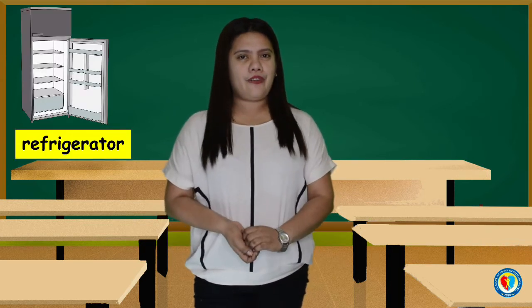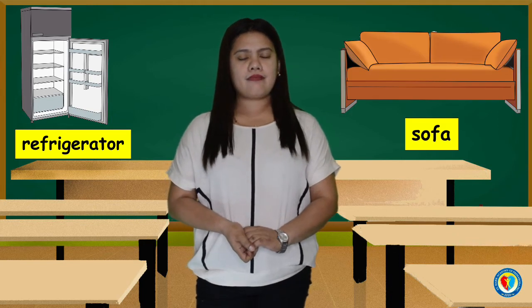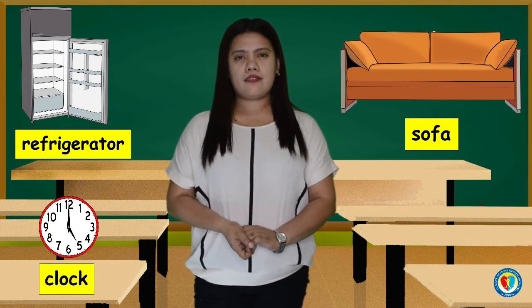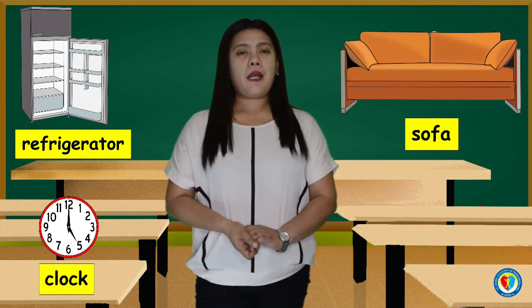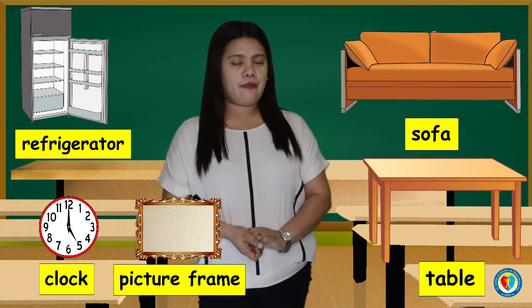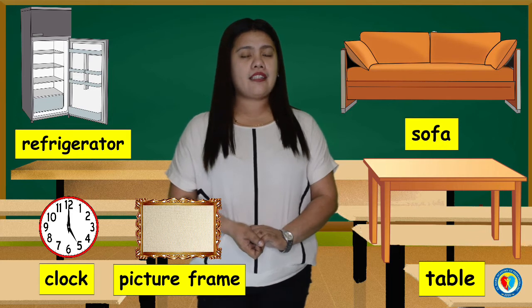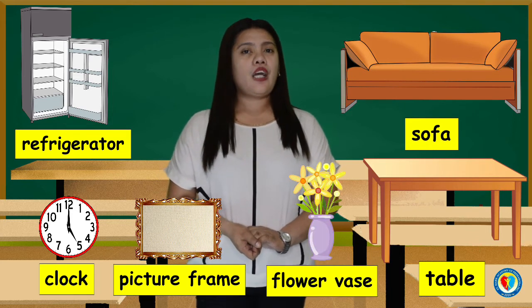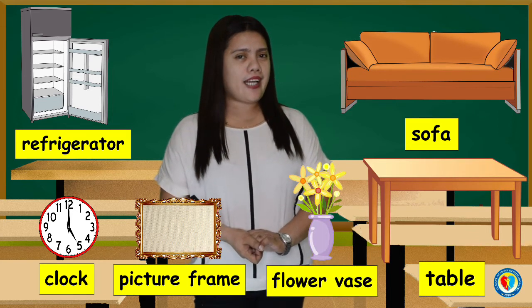Look at these pictures. Observe the sizes of the different objects that you can see: refrigerator, sofa, clock, picture frame, table, and flower vase. Do you see the big objects?